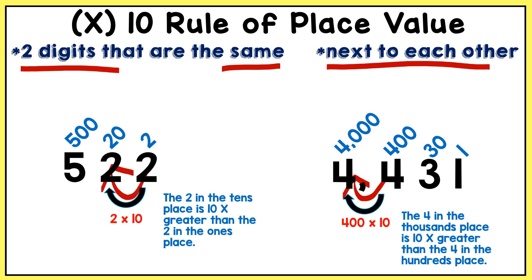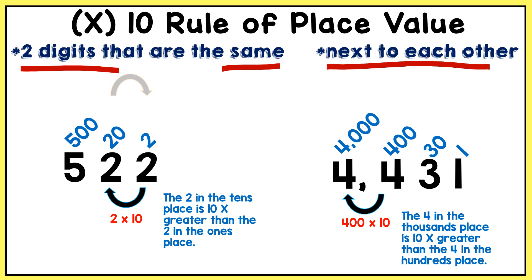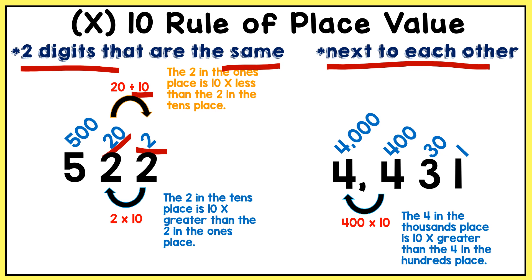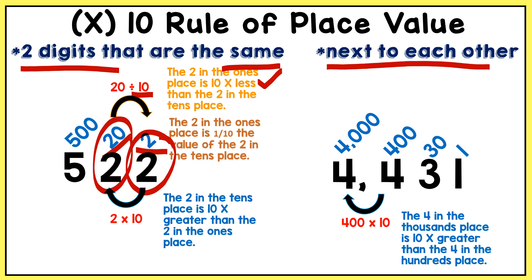If we go in the opposite direction, we would be finding numbers that are 10 times less. Moving in this direction, I take 20 and divide it by 10 to get 2. So I would say that the 2 in the ones place is 10 times less than the 2 in the tens place. I could also say that the 2 in the ones place is one tenth the value of the 2 in the tens place.